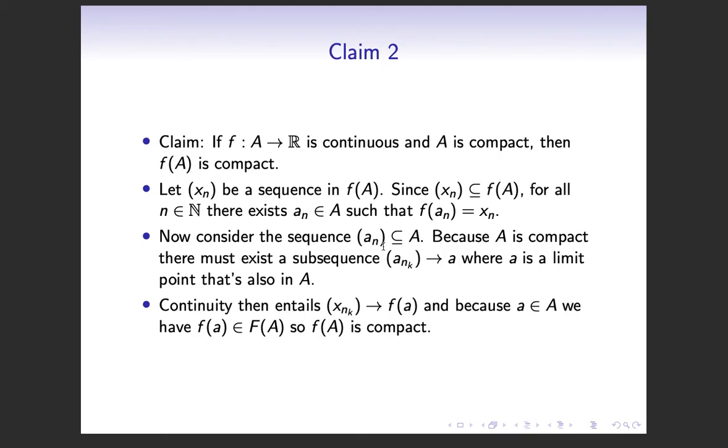Now this is going to form a sequence of these a_n's and every one of them is in big A. And because A is compact there must be a subsequence a_n_k that has a limit a where the limit is also in the set. And this is just the definition of what it means to be compact. Every sequence in the set A has a convergent subsequence that converges to a limit also in A.